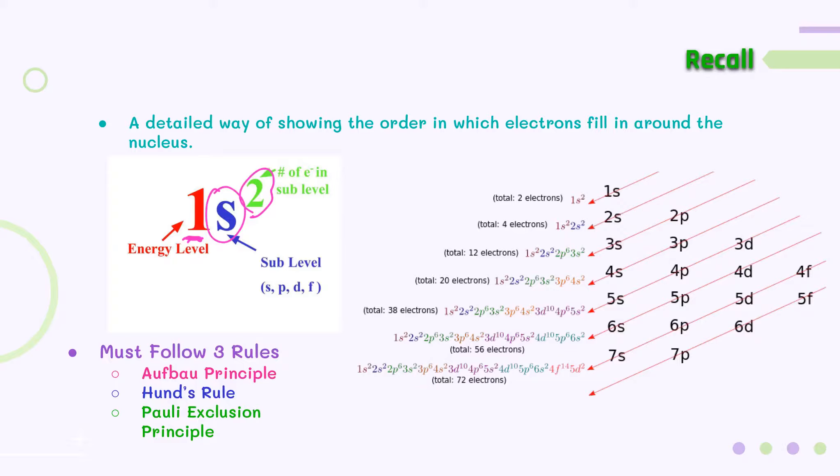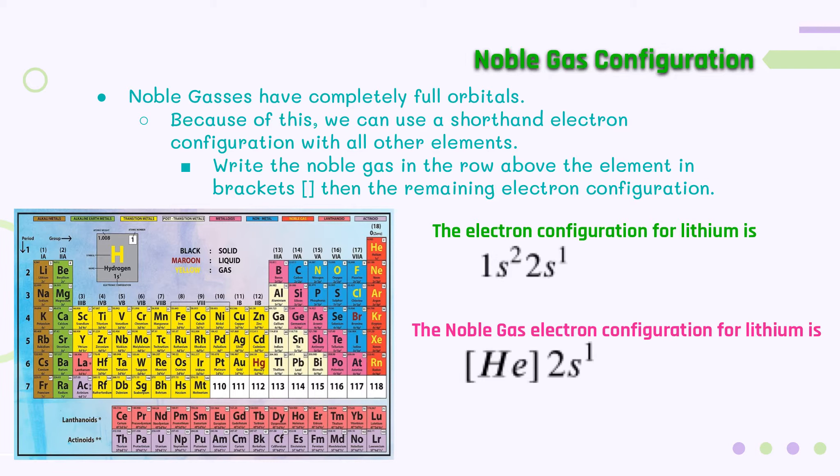Remember we have to follow three rules: Aufbau's principle, Hund's rule, and Pauli exclusion principle. Noble Gas Configuration for an element is a shorthand way of writing its electron configuration. The reason we can do that is because noble gases have completely full orbitals. Because of that, we can use a shorthand electron configuration with all other elements. How we do this is we write the noble gas that is in the row above the element in brackets, then the remaining electron configuration.